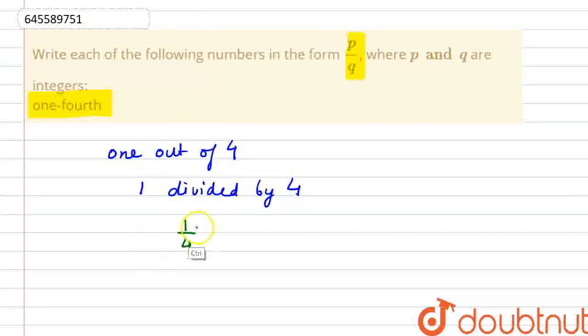And we can see it in the form of p and q, where p and q, that is 1 and 4, are integers. That means our final answer is 1 by 4. Thank you.